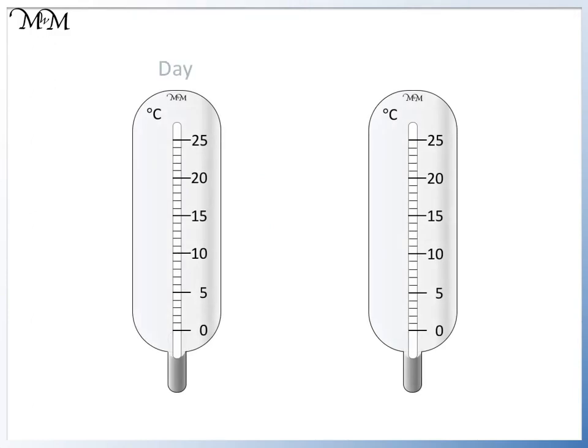The daytime temperature in New York is shown on this thermometer. It's 2 increments higher than 15. To find its value, we can count on from 15: 16, 17. So the temperature is 17 degrees C.